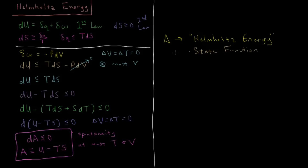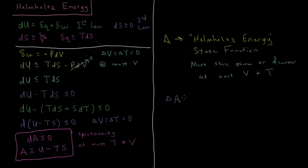The Helmholtz energy must stay the same or decrease in order to satisfy both the first and second laws of thermodynamics — it must stay the same or decrease at constant volume and temperature. In terms of macroscopic changes, the change in A during a process is ΔA = ΔU minus T ΔS, and this must be less than or equal to zero for any spontaneous process at constant volume and temperature.